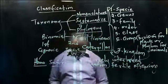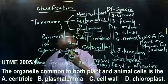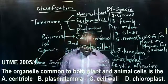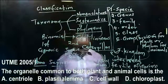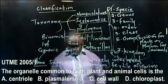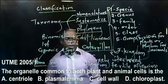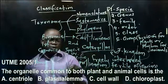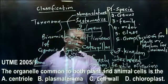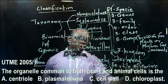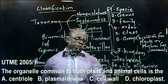The next question was extracted from JAM 2005 No. 1: The organelle common to both plant and animal cells. The answer is option B, the plasmalemma — also called the cell membrane or plasma membrane — which is common to both plant and animal cells.